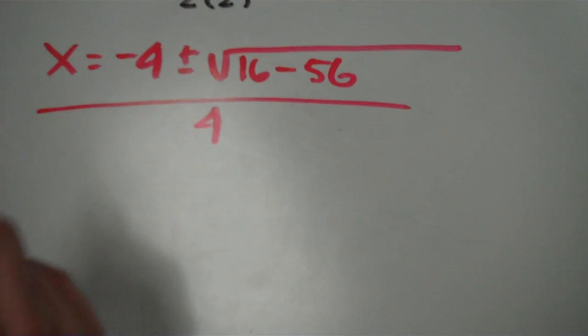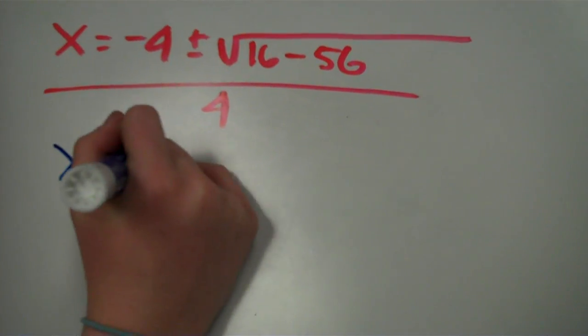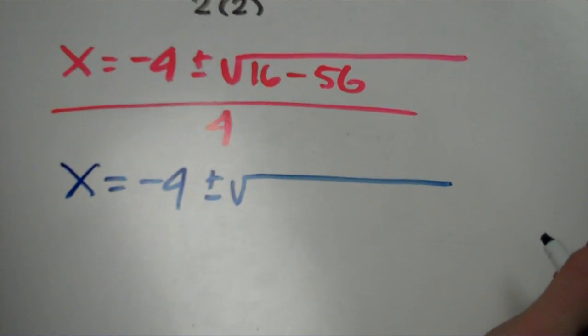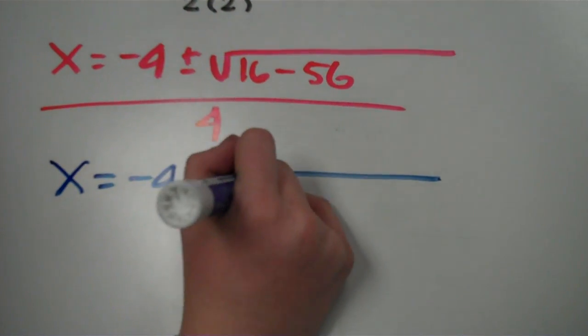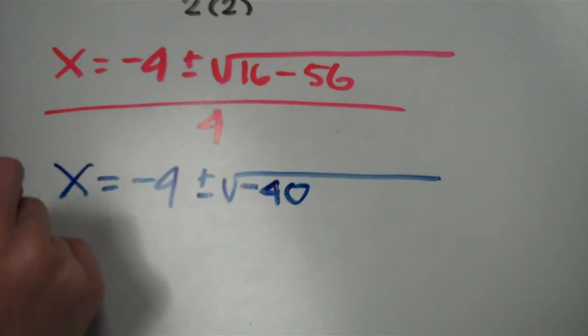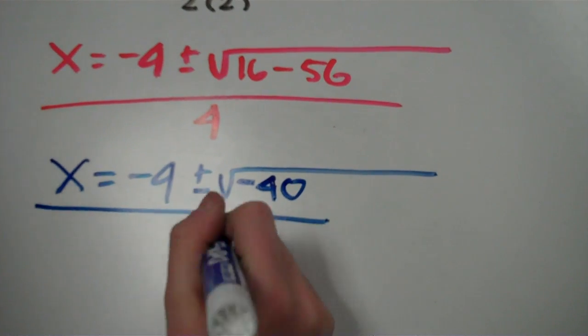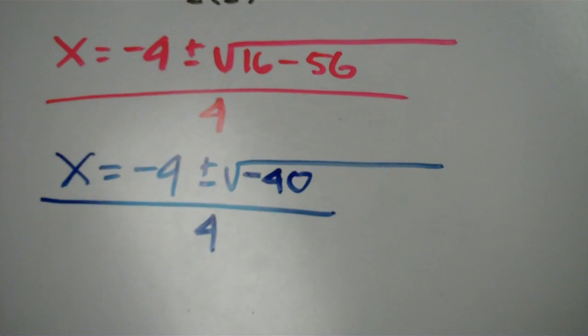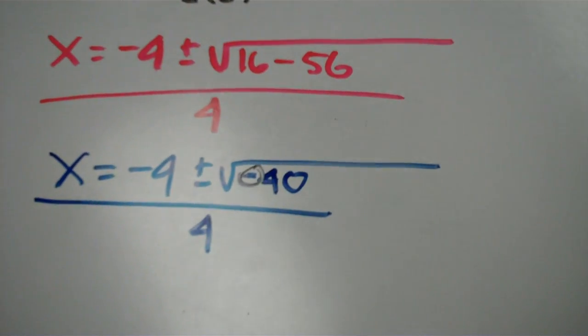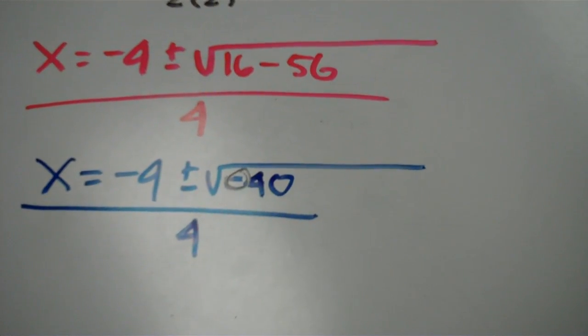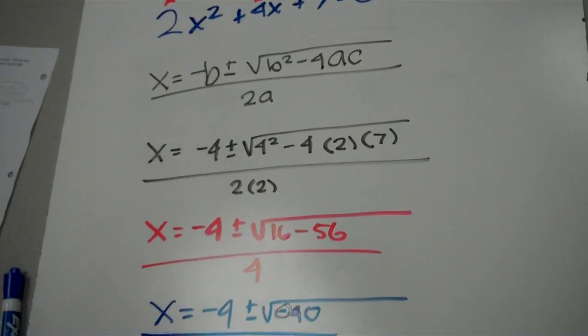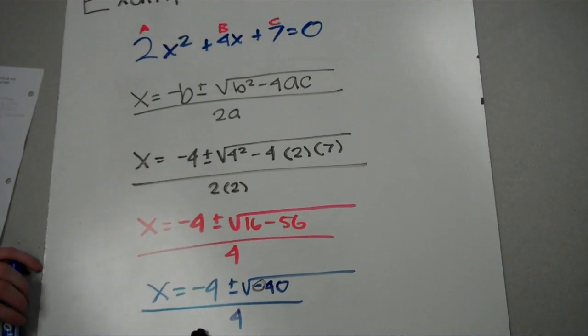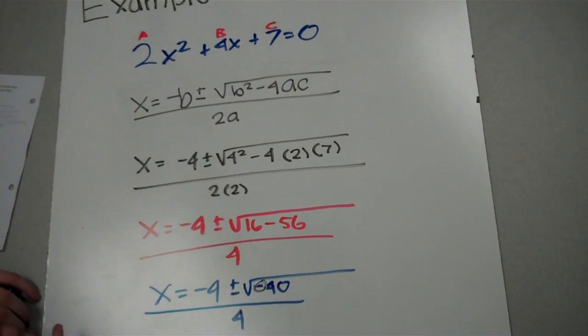And then x equals negative 4 plus or minus square root 16 minus 56 is negative 40, all over 4. This equation is not able to work because you cannot square root a negative, so this equation would not work. You would have to leave it in this formation, and that is how you solve this quadratic formula.